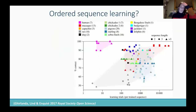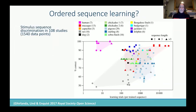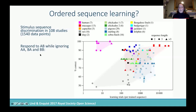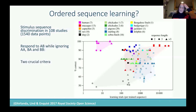This focus on ordered sequence learning is key, and this paper by Stefano Gerlander is quite nice in highlighting it. They took 108 studies of stimulus sequence discrimination over many different species — humans had seven studies, macaques had thirteen, and so on. The stimulus sequence discrimination task is essentially getting an animal to respond to a sequence A-B while ignoring sequences A-A, B-A, and B-B, with two-length and three-or-more-length sequences included.